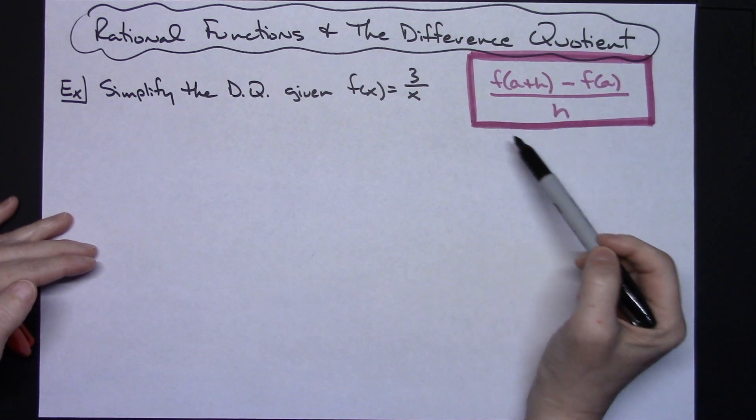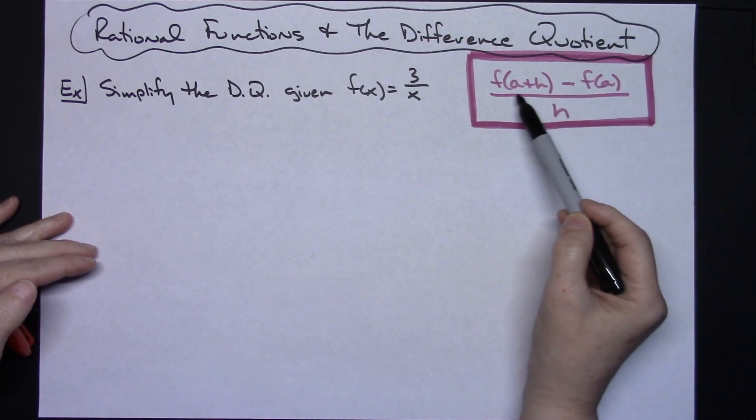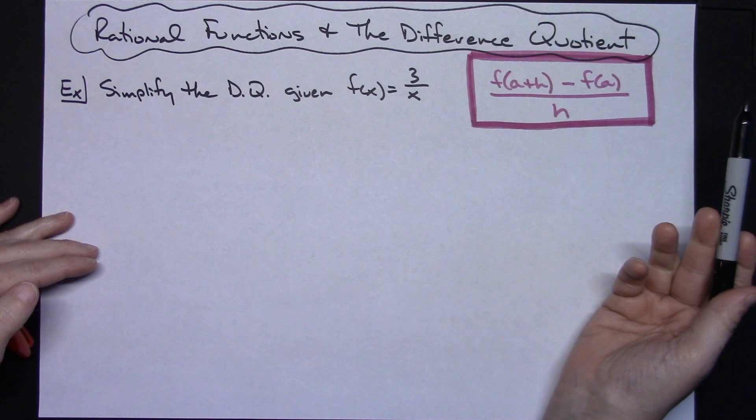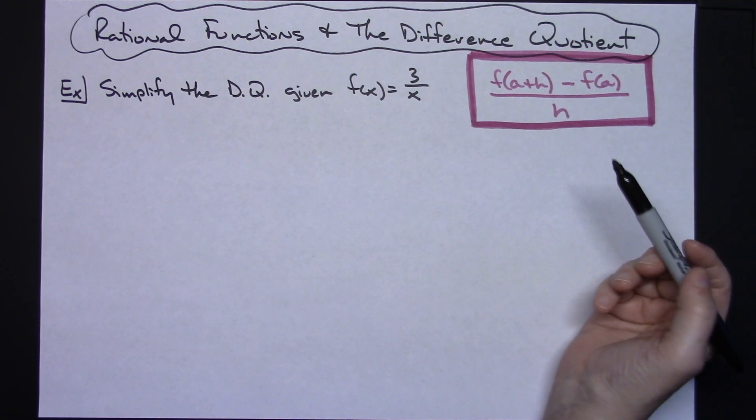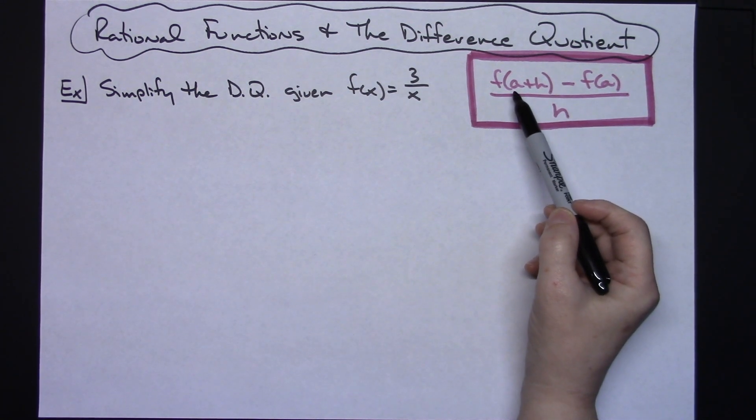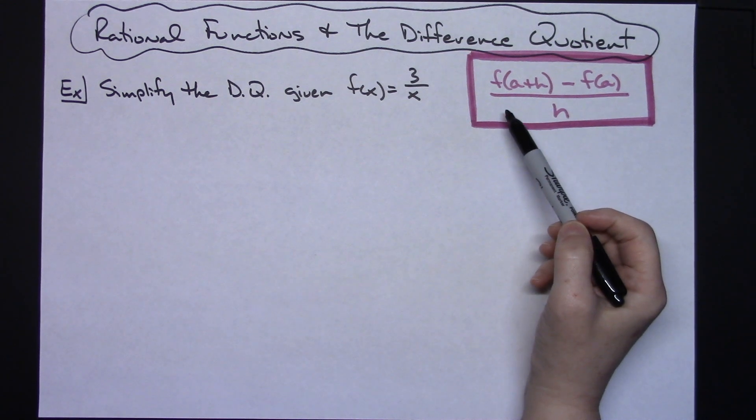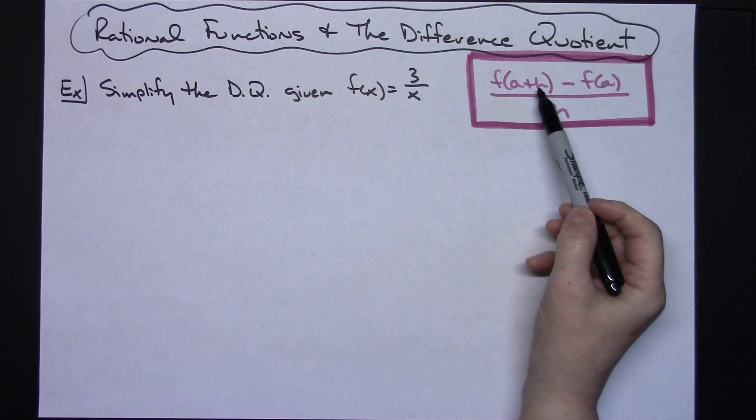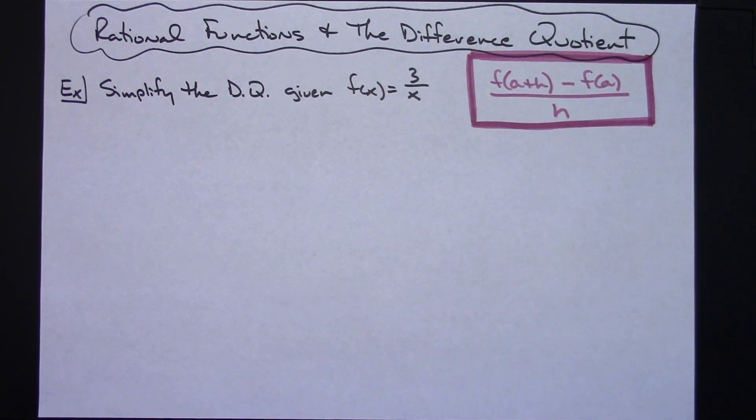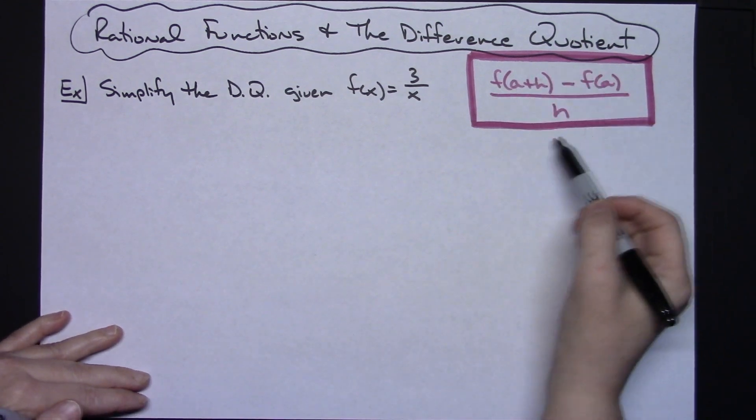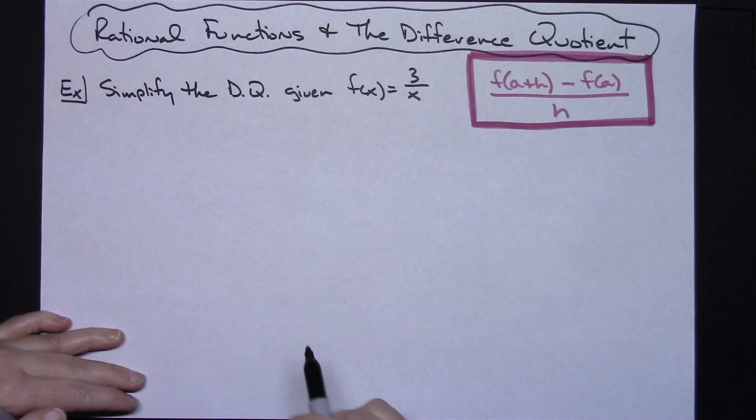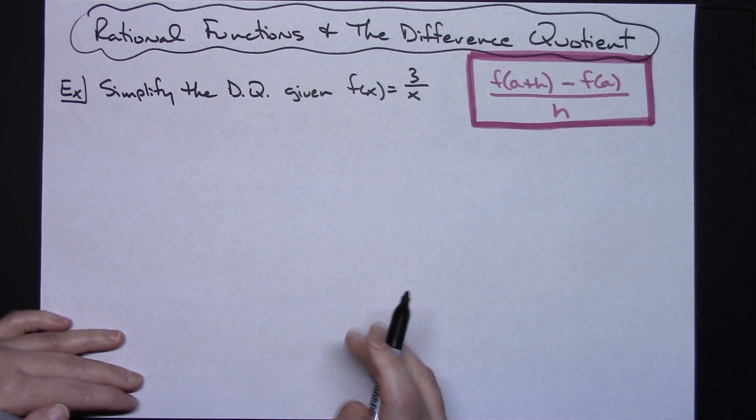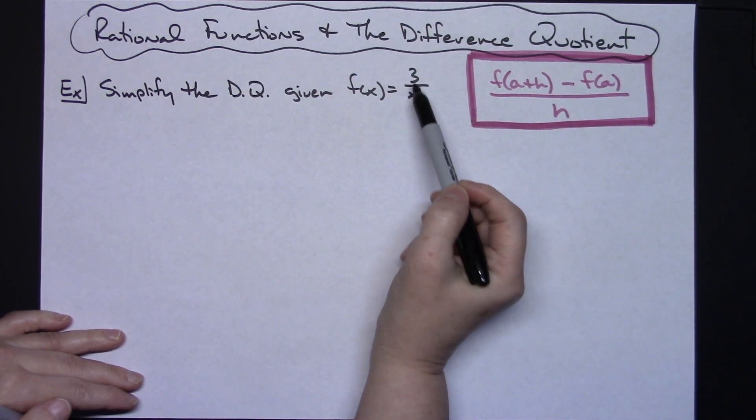I'm going to use the one that uses the a plus h, because that's what's being currently used in my textbook. You'll see other ones where this is an x plus h, you'll also see versions where it's x plus delta x. What variables are used really is not important. The overall implementation of that formula is the same regardless of the variables used.